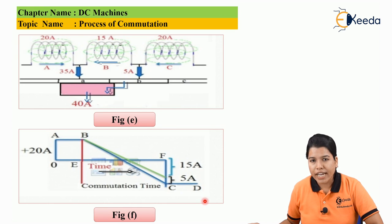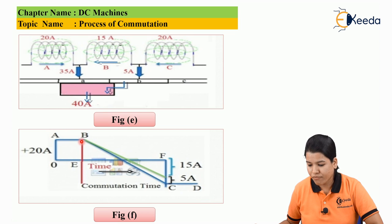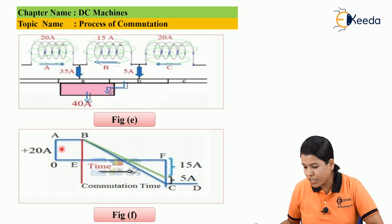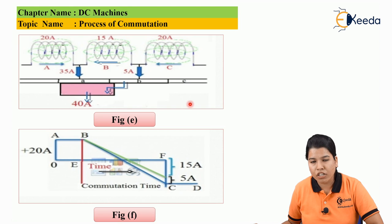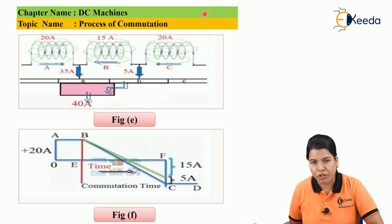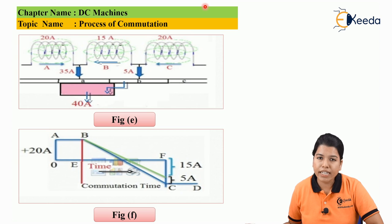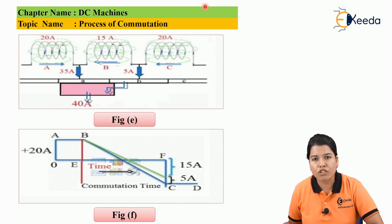Figure F shows the graph for the commutation period. The total commutation time is shown by segment BC on the graph. AB is prior to commutation and CD is after commutation. The total commutation time depends on the time taken by a particular coil to complete the process of commutation.